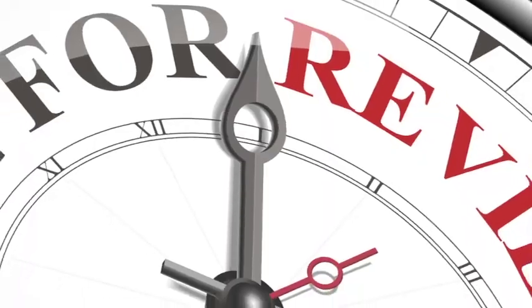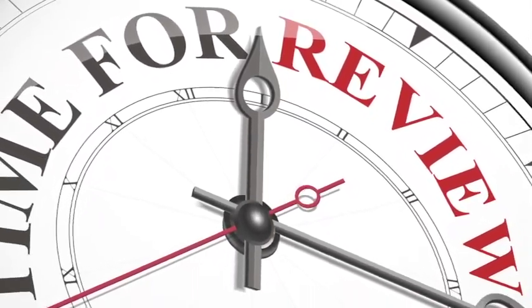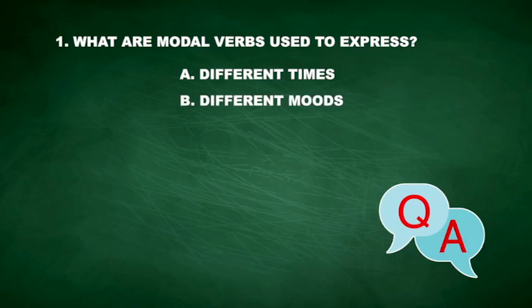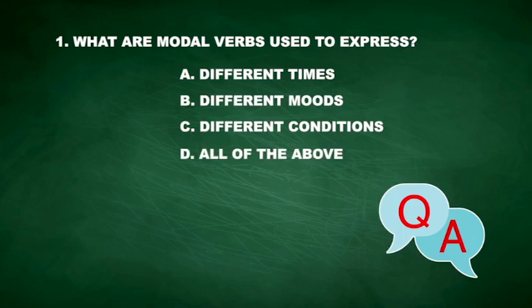Let's review what we have just learned about modal auxiliary verbs. Question 1: What are modal verbs used to express? A. Different times. B. Different moods. C. Different conditions. D. All of the above. If you answered D, you know that modal verbs express different moods, times, and conditions.